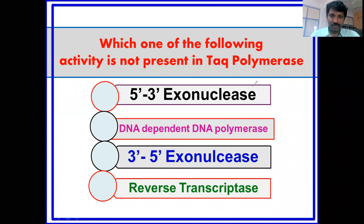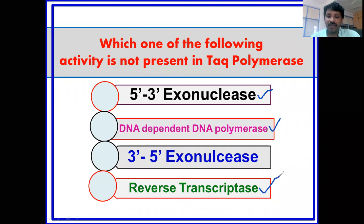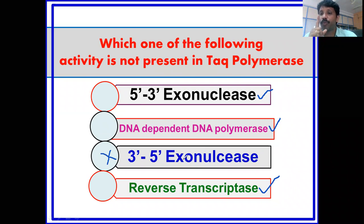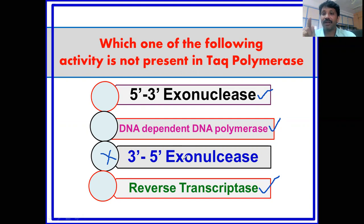Now we can pick up the answer. The N-terminal region of that polymerase consists of five-prime to three-prime exonuclease activity, and the C-terminal region consists of DNA-dependent DNA polymerase. Reverse transcriptase activity is also present. What is NOT present in Taq DNA polymerase is three-prime to five-prime exonuclease activity. That three-prime to five-prime exonuclease activity is nothing but proofreading. Proofreading means whenever the enzyme incorporates the wrong nucleotide into the growing chain, that has to be removed because it is not complementary to the template.